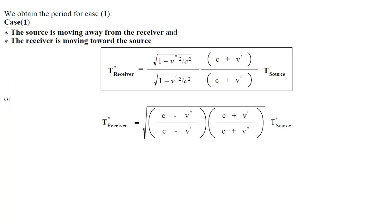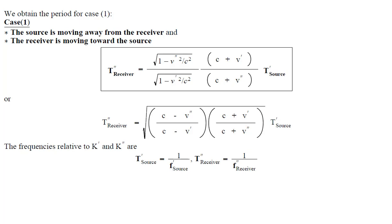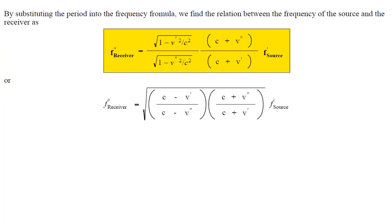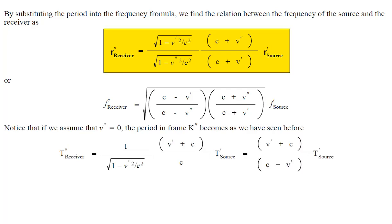From which we obtain, substituting gamma prime and gamma double prime, we obtain the period formula for case 1: the source is moving away from the receiver and the receiver is moving toward the source. The frequencies relative to observer K' and K'' are the inverse of the periods T' and T''. By substituting the period into the frequency formula, we find the relation between the frequency of the source and the receiver. Notice that if we assume that V'' equals 0, the period in frame K'' formula becomes as we have seen before.